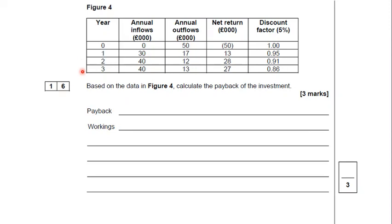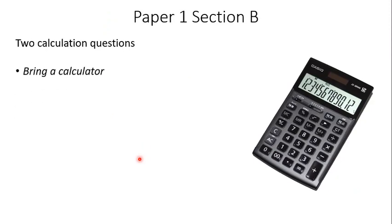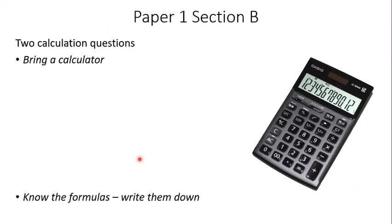This is the first of the calculation questions from the 2017 exam. The topic being examined is investment appraisal and they give you this and they ask you to calculate the payback of the investment. Now then you'll see that they've got a specific space where they want you to write the payback period and where they want you to show your workings.